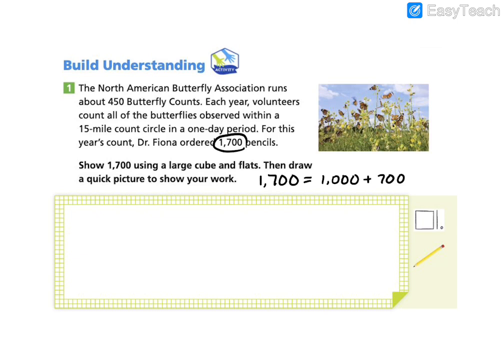So once I have that broken apart into expanded form, I want to think about how I'm going to represent that using hundreds blocks. Well, it tells me to use a large cube. One large cube is going to be equal to 10 flats. If we have 10 groups of 100, then that's equal to our 1,000 that we need to show the number 1,700. So I'm going to go ahead and just show that large cube, meaning 1,000. And then to represent the next part of my number, 700, I'm going to go ahead and show seven flats.